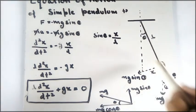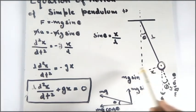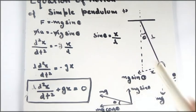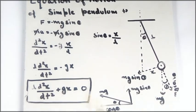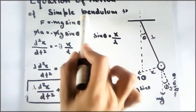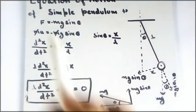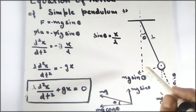the horizontal component mg cosθ is balanced by the tension of the string, and the vertical component mg sinθ will make the pendulum oscillate. So the restoring force is F = −mg sinθ. The negative sign is because when the pendulum reaches its mean position it will have some momentum and continue moving,